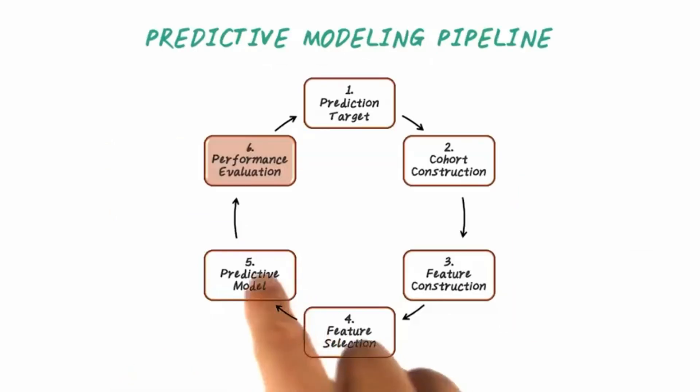To conclude, in this lecture, we introduced the key steps in building a predictive model, which include: define what is the prediction target and construct the right patient cohort, then construct all the possible relevant features from data, then find which features are relevant, and build the predictive model, and finally, evaluate the model performance.